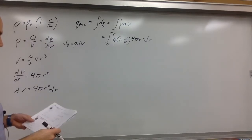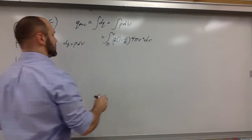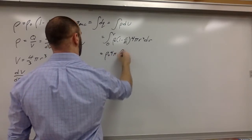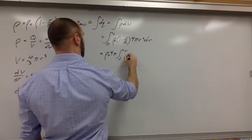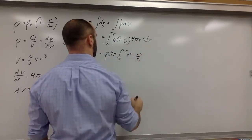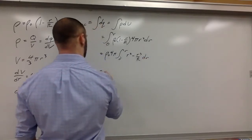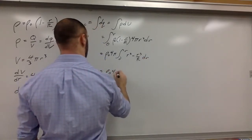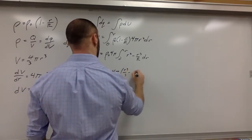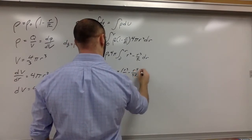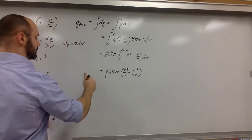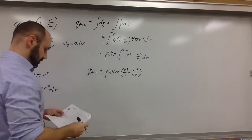We bring out rho-naught and 4 pi, so the integral from zero to r becomes r squared minus r cubed over big R, dr. Evaluating that gives rho-naught times 4 pi times [r cubed over 3 minus r to the fourth over 4R], evaluated from zero to r. That expression is Q_enclosed — we've found Q_enclosed.